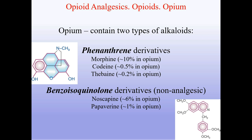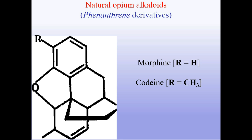Opium contains two types of alkaloids: phenanthrene derivatives — morphine (around 10%), codeine (around 0.5%), and thebaine (around 0.2%) — and benzoisoquinoline derivatives, which are non-analgesic: noscapine (around 6%) and papaverine (around 1%). The general structure of phenanthrene derivatives shows that depending on whether hydrogen or CH3 is present at the radical position, the compound will be morphine or codeine respectively.